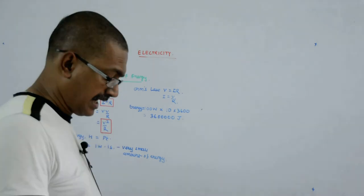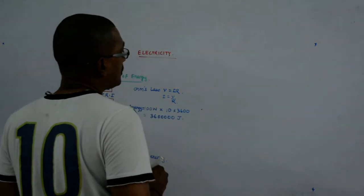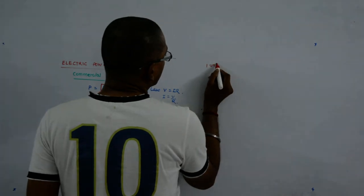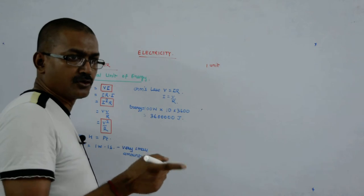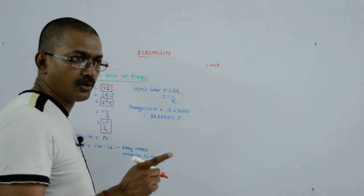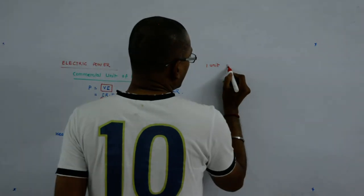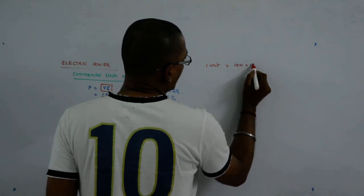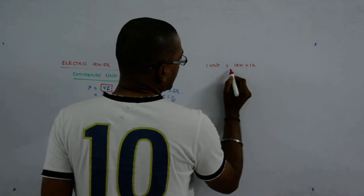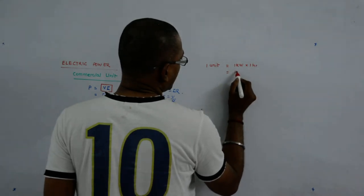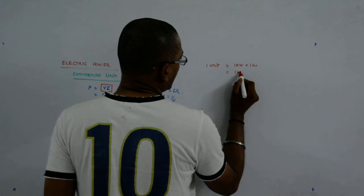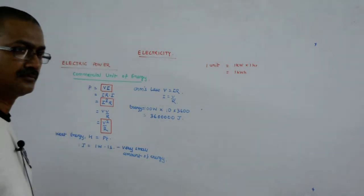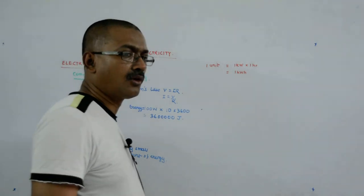And we choose to use one unit of electricity as told by your electricity board as equal to one kilowatt into one hour, which is equal to one kilowatt hour.